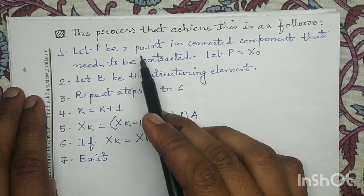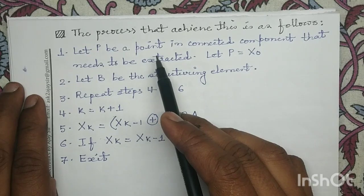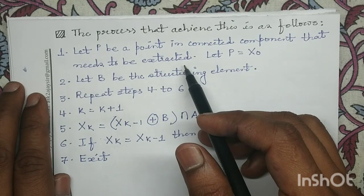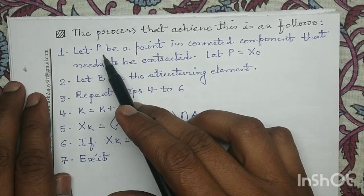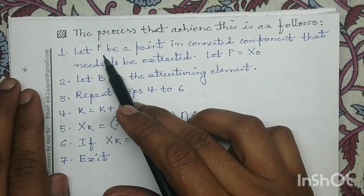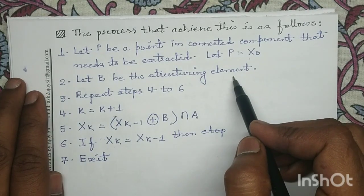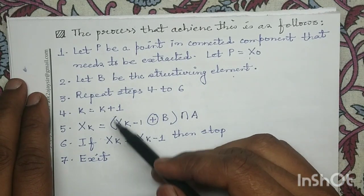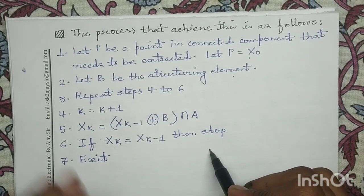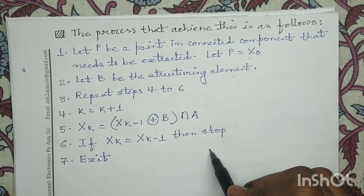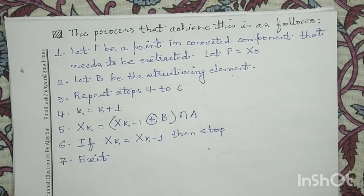So the process of extraction of connected component is as follows: initially, we consider a starting point P in the connected component set and mark this pixel P as x_0. Then we consider the structuring element and perform this iterative operation until we reach the point of convergence. When the point of convergence is met, we stop our iterative algorithm, and we have detected the connected component present in the input image A. Thank you.